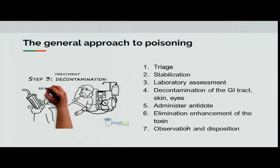The general approach to poisoning starts with triage, then stabilization of the patient. Some poisons you can identify by history and physical exam, but some require laboratory assessments. There's decontamination available for the GI tract, skin, and eyes, as well as antidotes if needed, elimination enhancement of the toxin, and then observation and disposition. Where does the child need to go — the emergency room, urgent care, or can the child be watched at home?